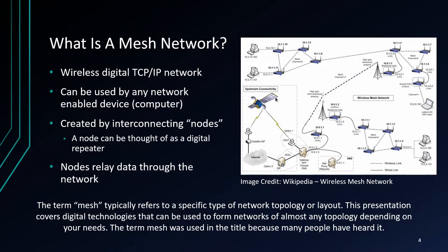To start out, let's define what a mesh network is. Simply put, a mesh network is a wireless digital TCP/IP network made up of repeaters called nodes. Mesh networking operates on microwave frequencies. Because it is a TCP/IP network, network-enabled devices such as computers, tablets, and smartphones can connect to it and communicate over the mesh. The term mesh typically refers to a specific network topology, but this presentation covers digital technologies that can form networks of many different topologies — more referring to the interconnectable nature of these devices.